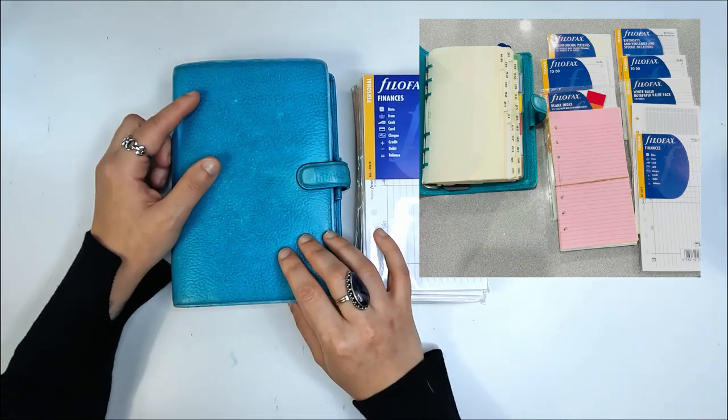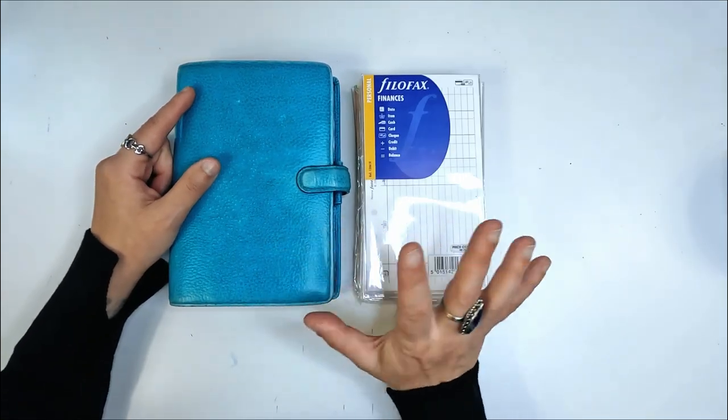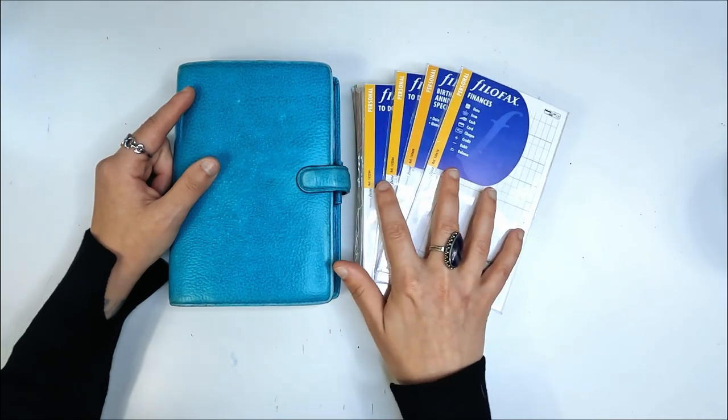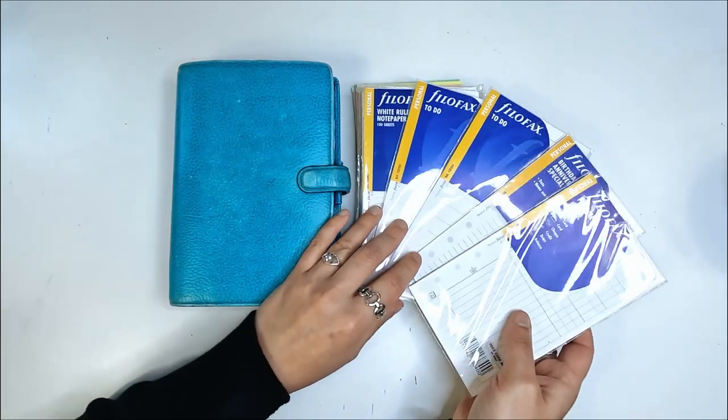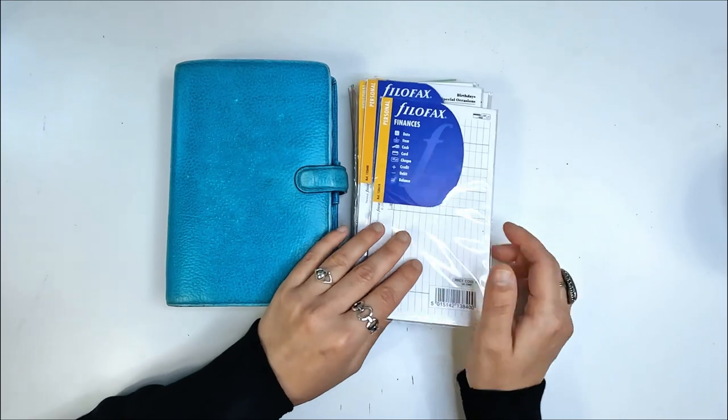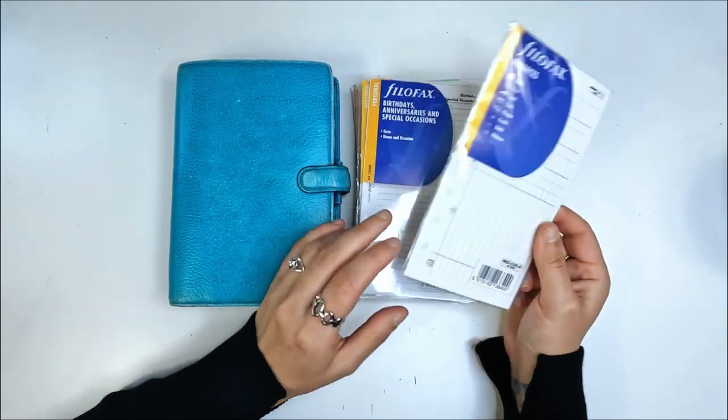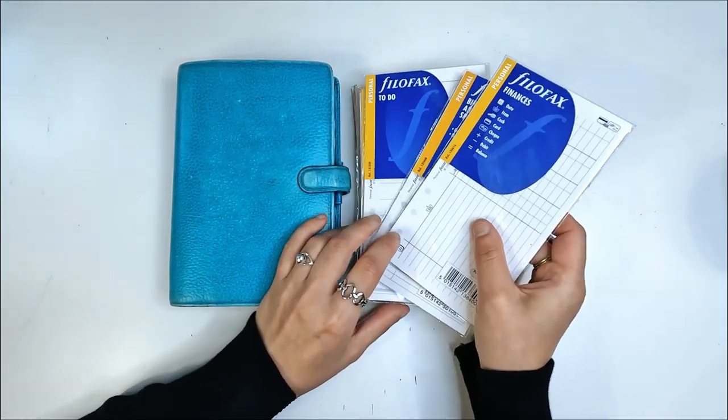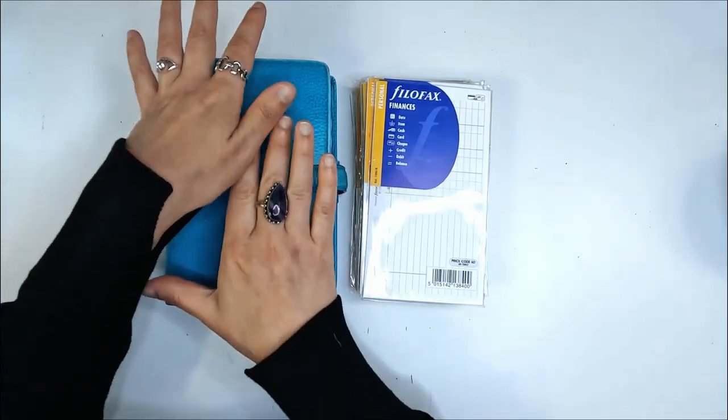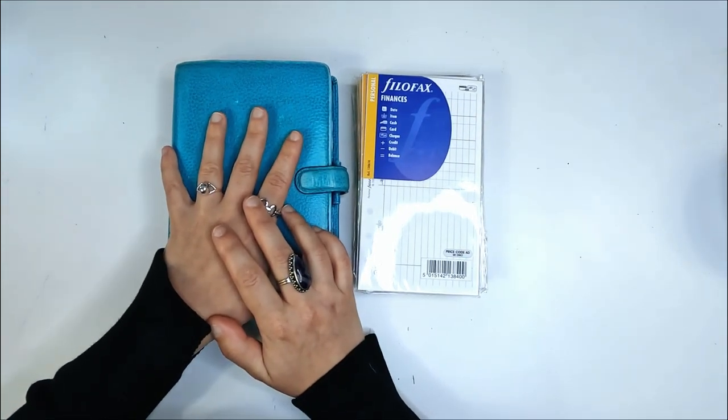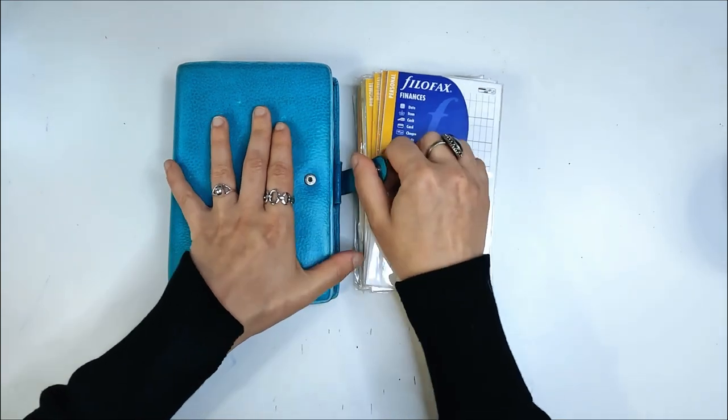I could see that it came with this Finsbury personal size in aqua, and I could see that it came with quite a few sealed Filofax inserts. Really, I actually purchased this lot for these inserts. These run at about eight to ten dollars, I think. However, upon receiving this little lot, what I didn't realize is that the Filofax is completely full.